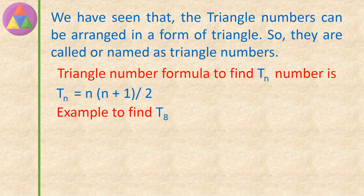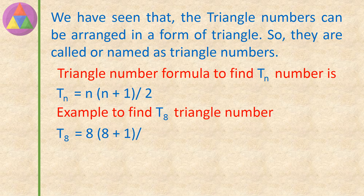Example: to find T8, the triangle number where n equals 8. T8 equals 8 into (8 plus 1), divided by 2, which equals 8 into 9, divided by 2, which equals 72 divided by 2, giving the T8 value as 36.